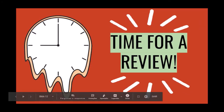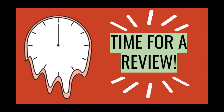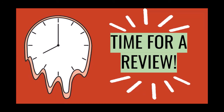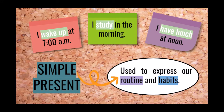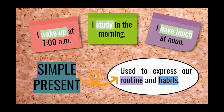Guys, it's time for a review. In this lesson, we are talking about our daily routines. But how do we express that in sentences in English? To talk about our routine and habits, we are going to use the Simple Present Tense. The Simple Present Tense is used to express our routine and habits in English. Take a look at these sentences: I wake up at 7am. I study in the morning. I have lunch at noon. All of these sentences are in the Simple Present Tense, and all of them express routine and habits — things we do every day.